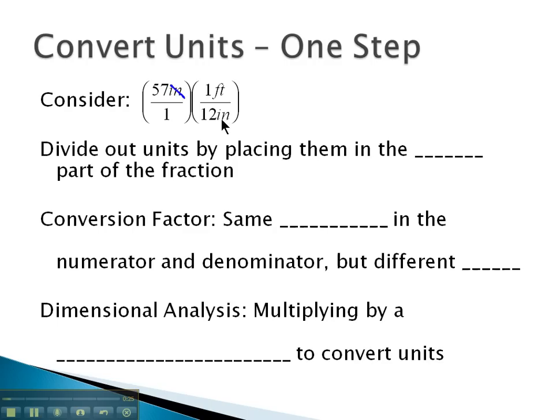Which means when we see inches on top and bottom, we can divide them out, which leaves us with 57 times 1 foot, or 57 feet, over 1 times 12, which is 12. This leaves the division problem 57 by 12, which is 4.75 feet.